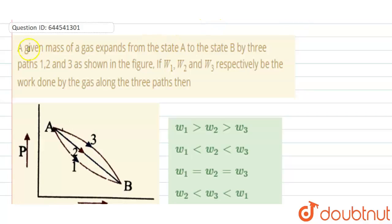Hello everyone, here our question is: a given mass of a gas expands from state A to state B by three paths 1, 2 and 3, shown in the figure. If W1, W2 and W3 respectively be the work done by the gas along the three paths,